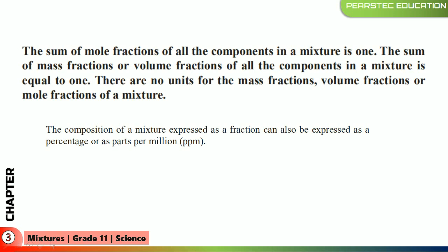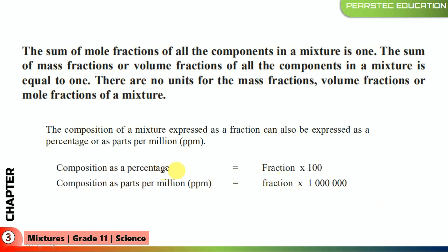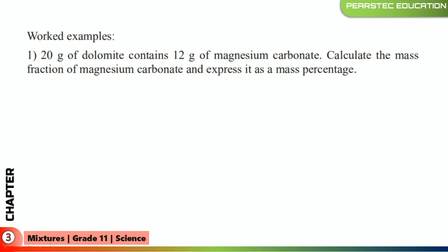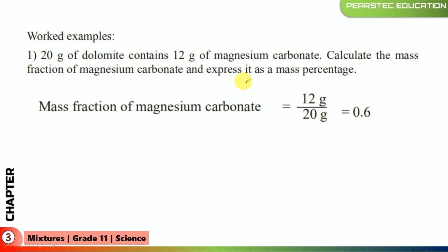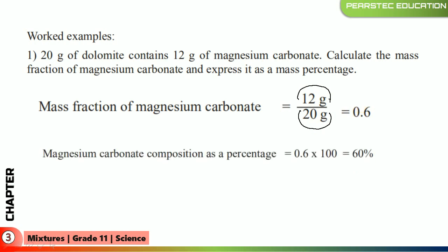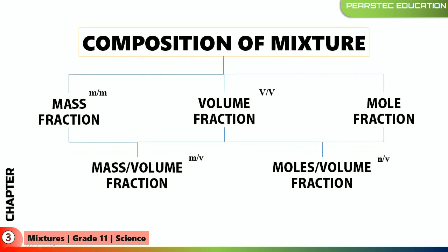The composition of a mixture expressed as a fraction can also be expressed as a percentage or as parts per million (ppm). Composition as percentage equals fraction × 100; parts per million equals fraction × 1,000,000. For example: 20 grams of dolomite contain 12 grams of magnesium carbonate. Calculate the mass fraction and express it as a mass percentage. Mass fraction = 12/20 = 0.6, and as a percentage: 0.6 × 100 = 60% magnesium carbonate.